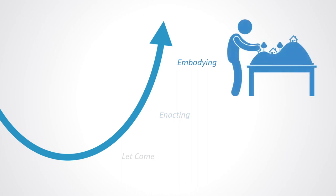Embodying is about prototyping the new by linking head, heart, and hand. How can processes be developed in the future? What phenomena and facts will characterize the organization of the future?